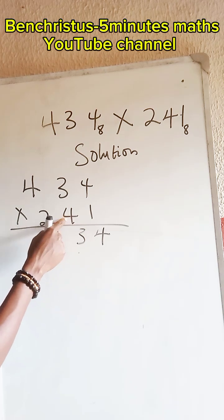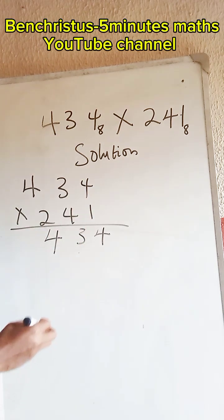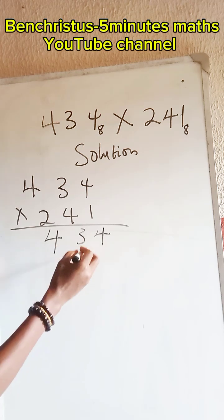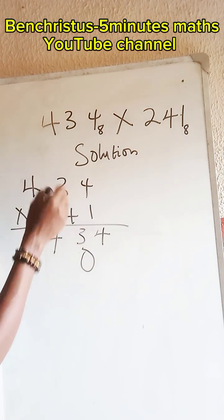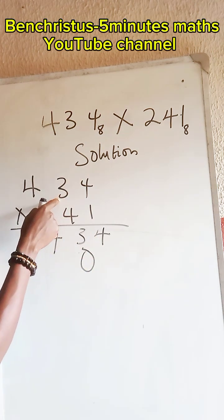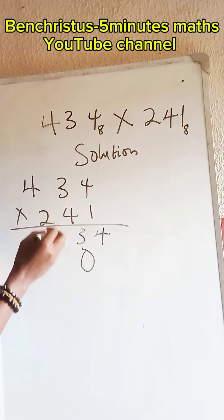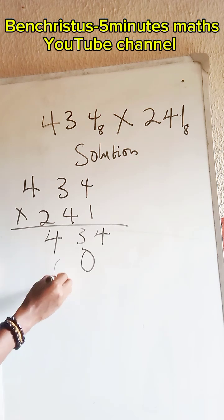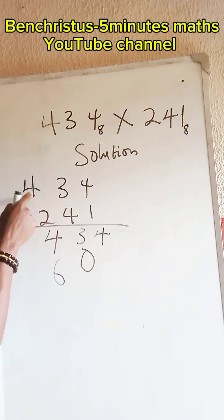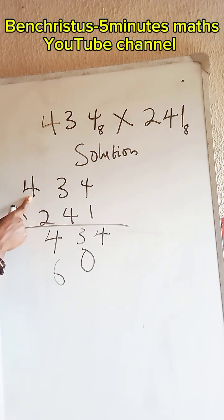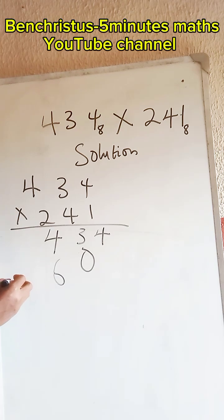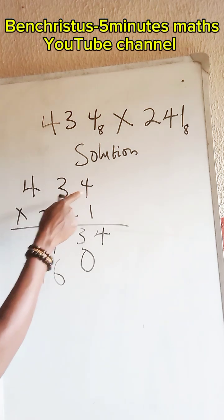Now the second digit: 4 times 4 is 16. 16 divided by 8 is 2 remainder 0 — write 0, carry 2. 4 times 3 is 12, plus 2 is 14. 14 divided by 8 is 1 remainder 6 — write 6, carry 1. 4 times 4 is 16, plus 1 is 17. 17 divided by 8 is 2 remainder 1 — write 1, carry 2.